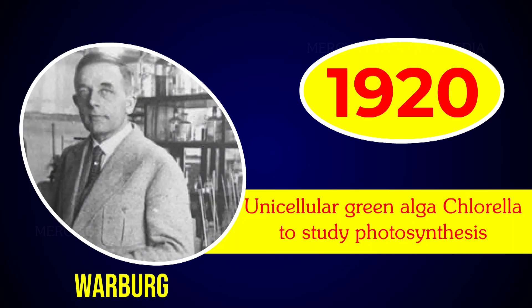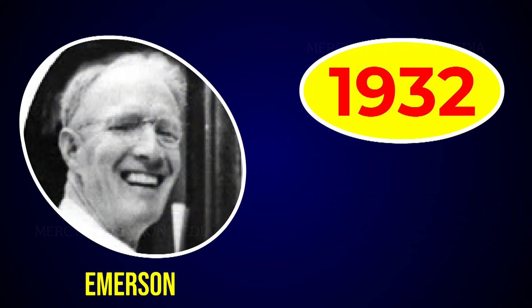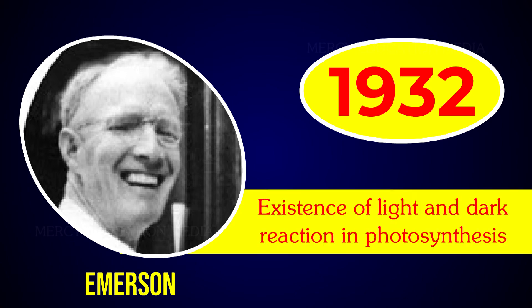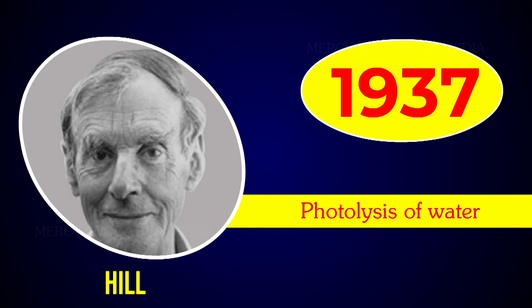In 1920, Warburg introduced the unicellular green alga Chlorella as a suitable material to study photosynthesis. In 1932, Emerson and Arnold showed the existence of light and dark reactions in photosynthesis.